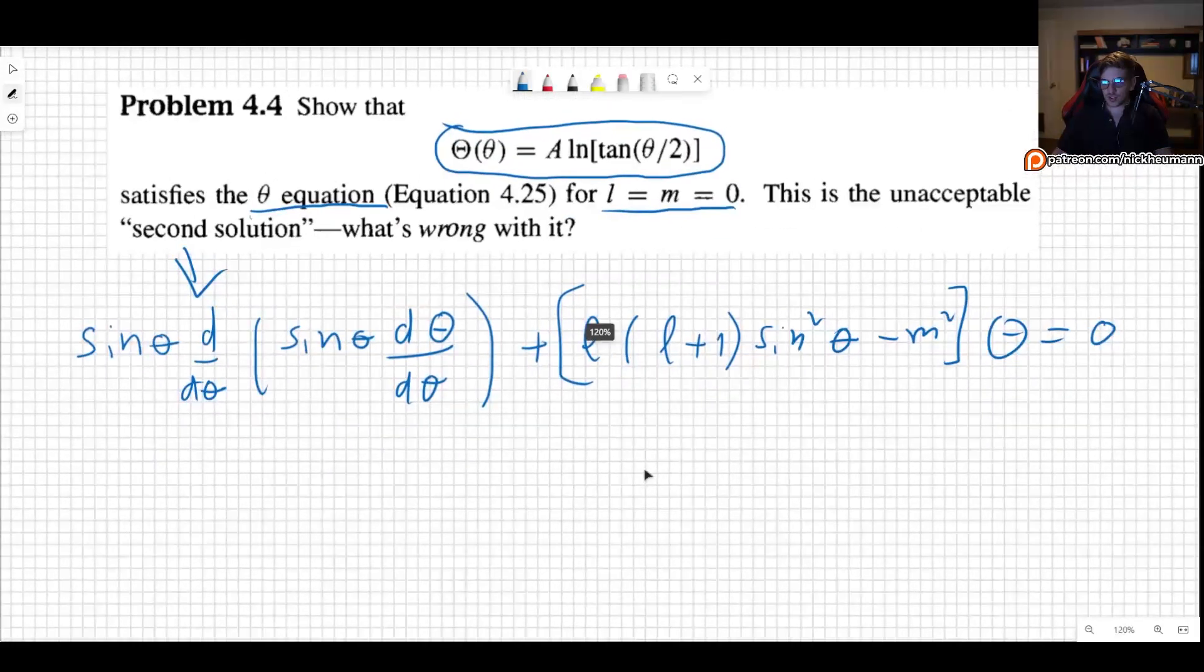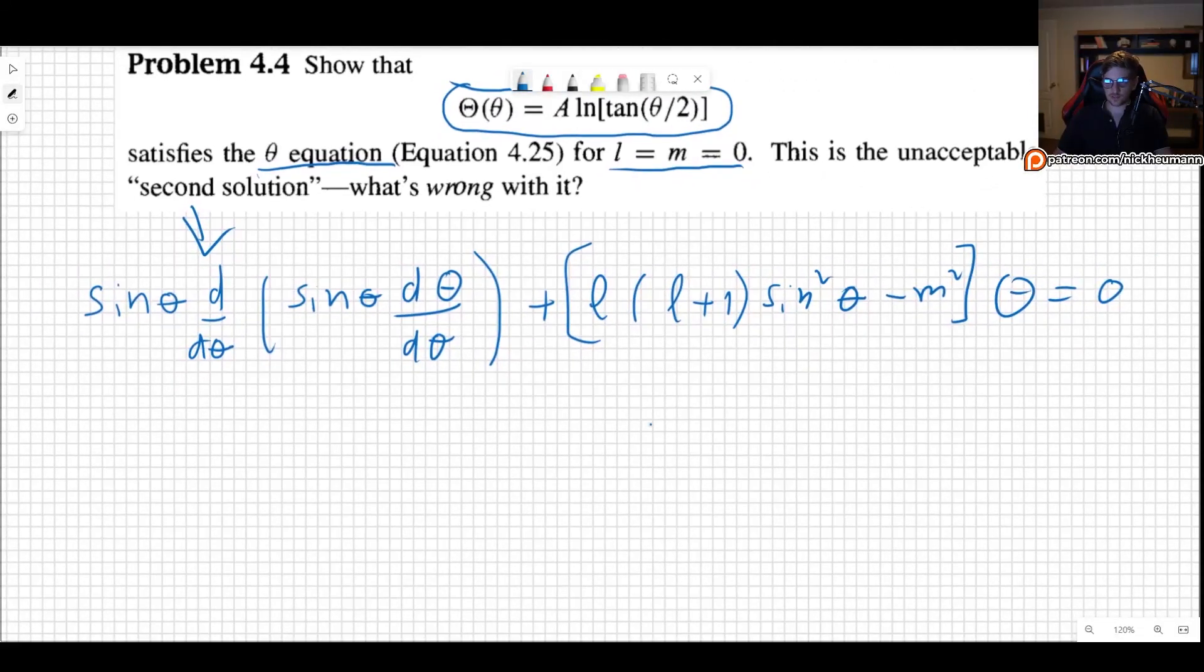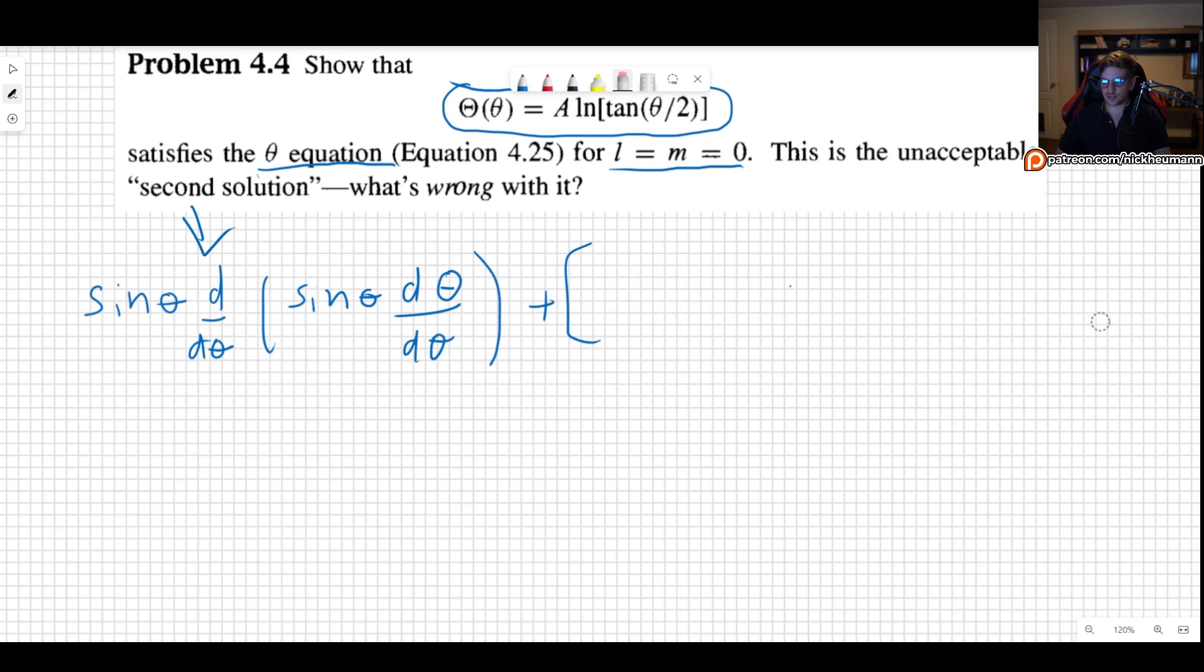So let's first show that it does satisfy the equation. For that we simply have to plug it in. Notice that we want to do it for the case L equal M equal 0, so that means this entire thing is 0 and this is also 0, so the equation simplifies considerably.